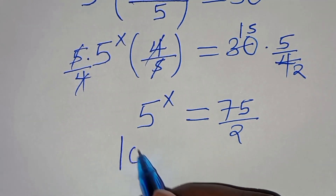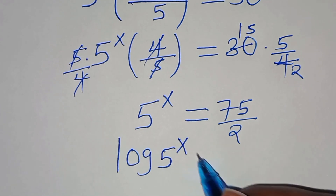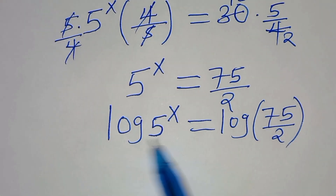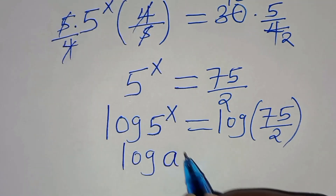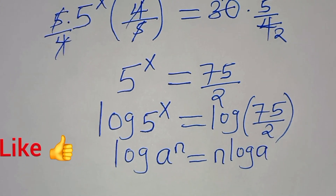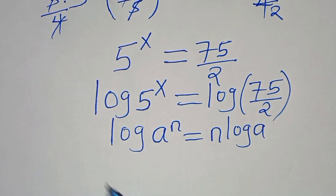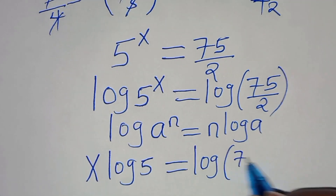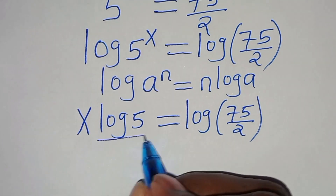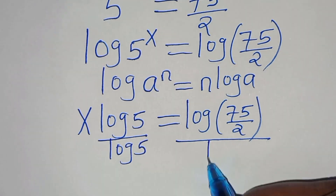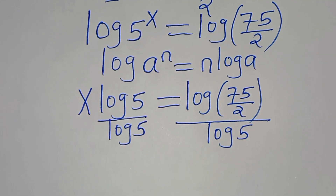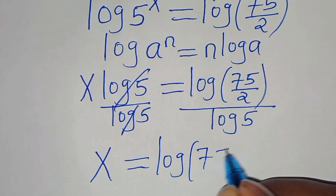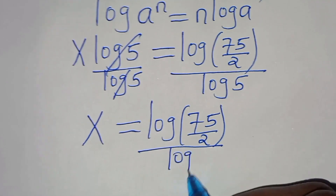To solve for x, we introduce logarithm on both sides, so that we have log(5^x) equal to log(75 over 2). Now log(5^x) is in the form log(a^n), which can be expressed as n·log(a). Applying this property, log(5^x) becomes x·log(5), equal to log(75 over 2). Dividing both sides by log(5), x equals log(75/2) divided by log(5).